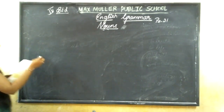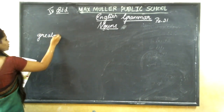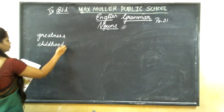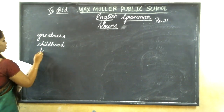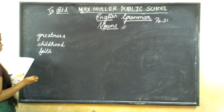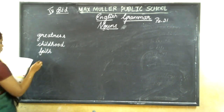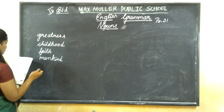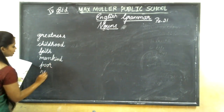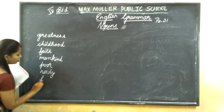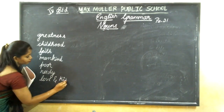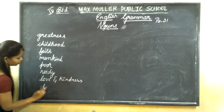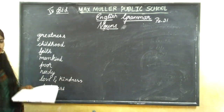The abstract nouns to underline in the passage are: greatness, childhood, faith, service, life, love, kindness, and darkness.